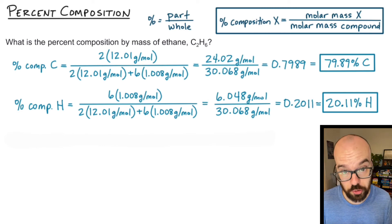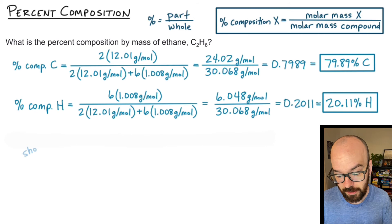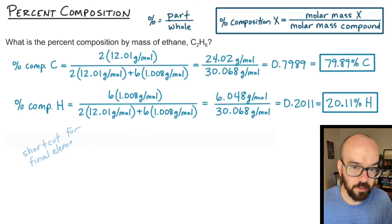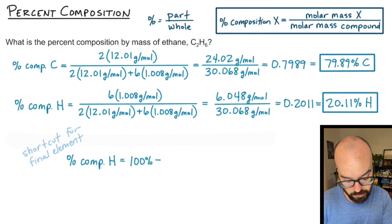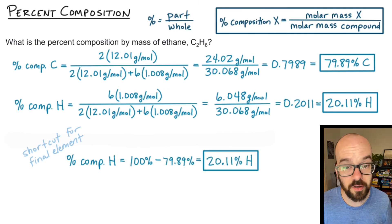So you can use that fact as a shortcut. Whatever the final element that you're trying to find the percent composition by mass of, you can just take 100% subtract away the other percent compositions, and that's going to tell you the percent composition of that final element. So for hydrogen here, if I hadn't done the second step, I could say that the percent composition of hydrogen is 100% minus the other percent composition I had, 79.89%, and I would get 20.11% hydrogen.